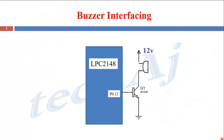This is the interfacing diagram of a buzzer with LPC2148 using a transistor as a driver. One terminal of the buzzer is connected to VCC, whereas the other terminal is connected to ground through the transistor acting as a switch. Whenever this transistor is ON, the ground is connected to the buzzer and the buzzer will turn ON. Whenever the transistor is OFF, the ground is disconnected and the buzzer will turn OFF.